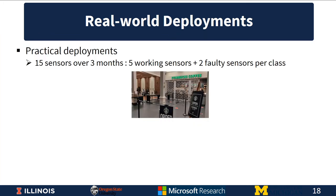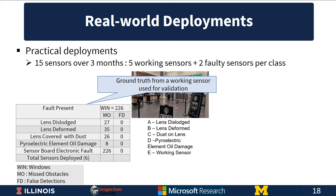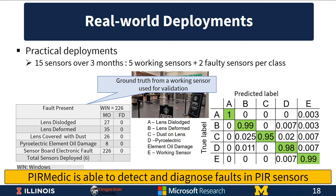For the Starbucks deployment, sensors included those with lens dislodged, lens deformed, dust on lens, oil condensate on the pyroelectric element, and working sensors. The faulty sensors missed obstacles during deployment, validated against ground truth from a working sensor. We collected the analog output signals from each sensor and sent them to PAR Medic for classification. The high values along the diagonal of the confusion matrix show that PAR Medic is able to detect and diagnose faults in PIR sensors with high accuracy.